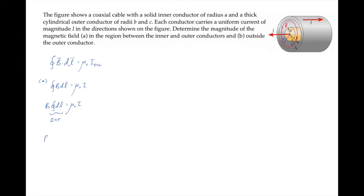We can solve for the magnetic field magnitude between the conductors. It works out to mu naught I over 2 pi r.